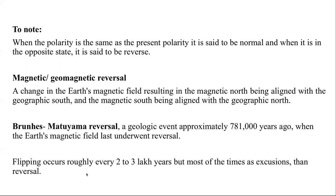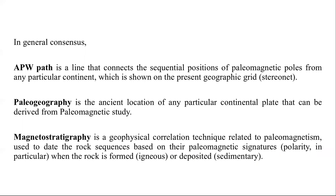The flipping of Earth's magnetic poles from north to south and south to north happens usually every 200,000 to 300,000 years, and is mostly regarded as an excursion — a short-duration magnetic polarity reversal. Paleomagnetic data sets are usable for apparent polar wander path (APWP) construction: a line connecting sequential positions of paleomagnetic poles obtained from rocks of different ages, plotted on a geographic grid.